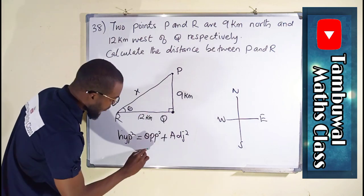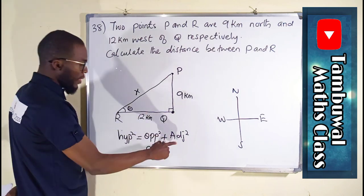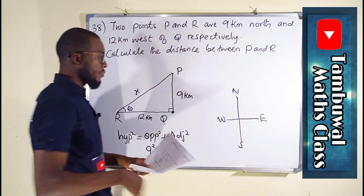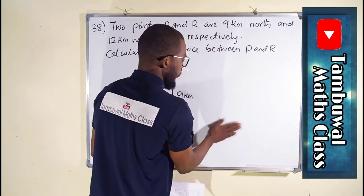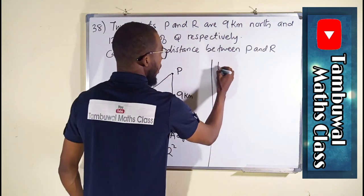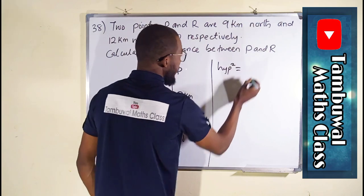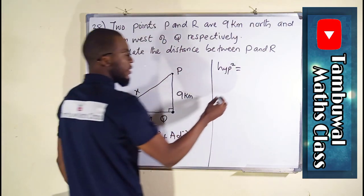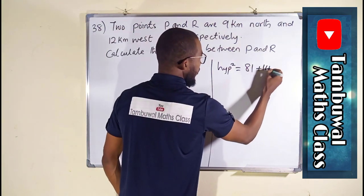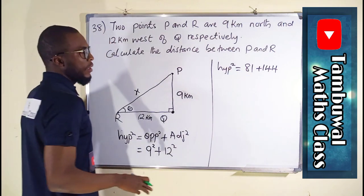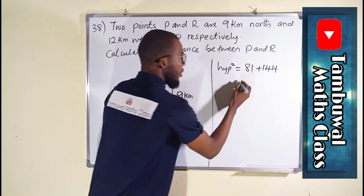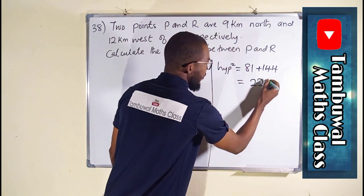Opposite is 9 km, so we have 9 squared plus adjacent, we have 12 squared. 12 squared is 144. If you add 81 and 144, you are going to obtain 225.